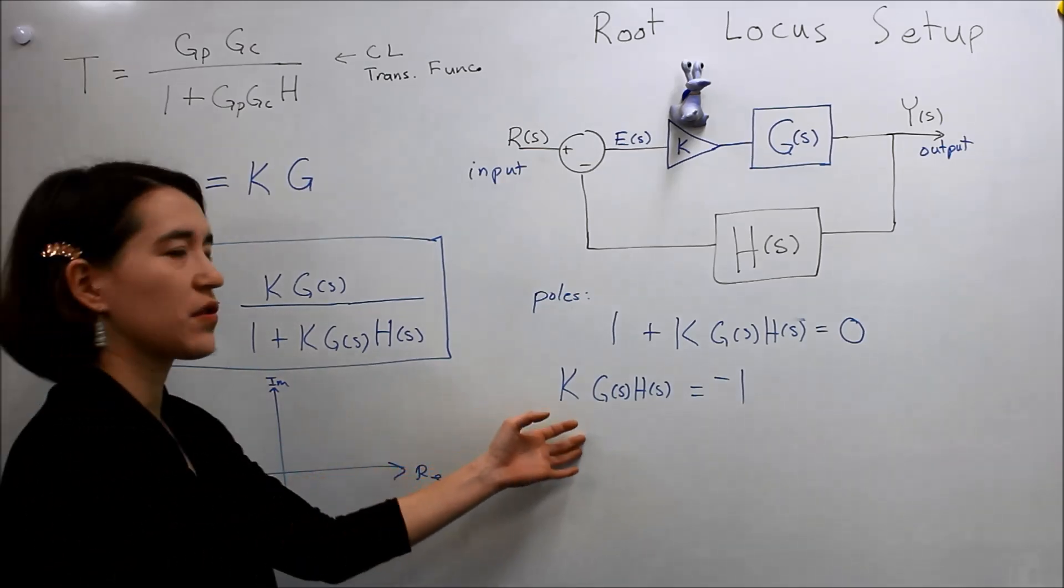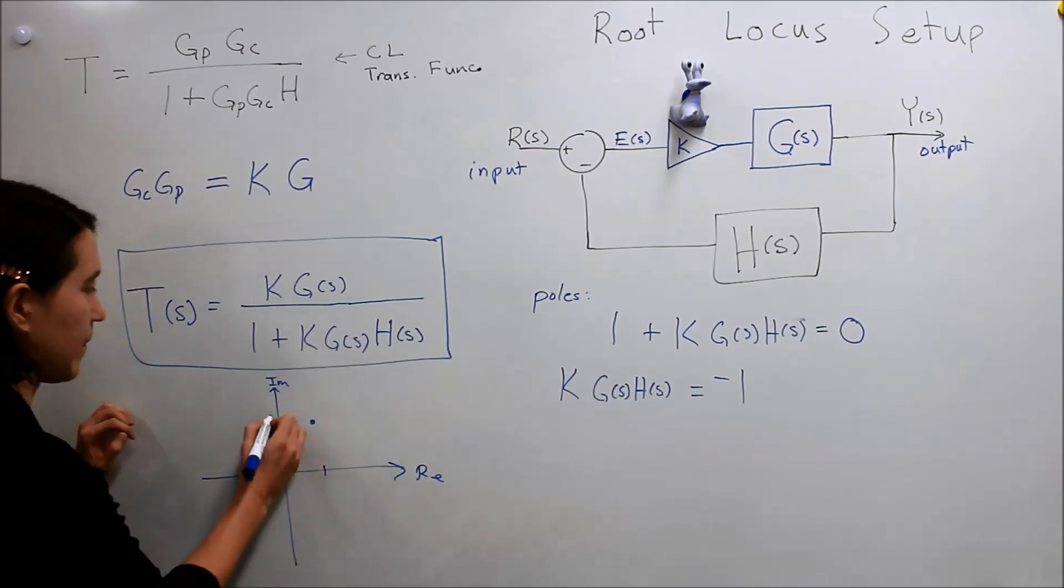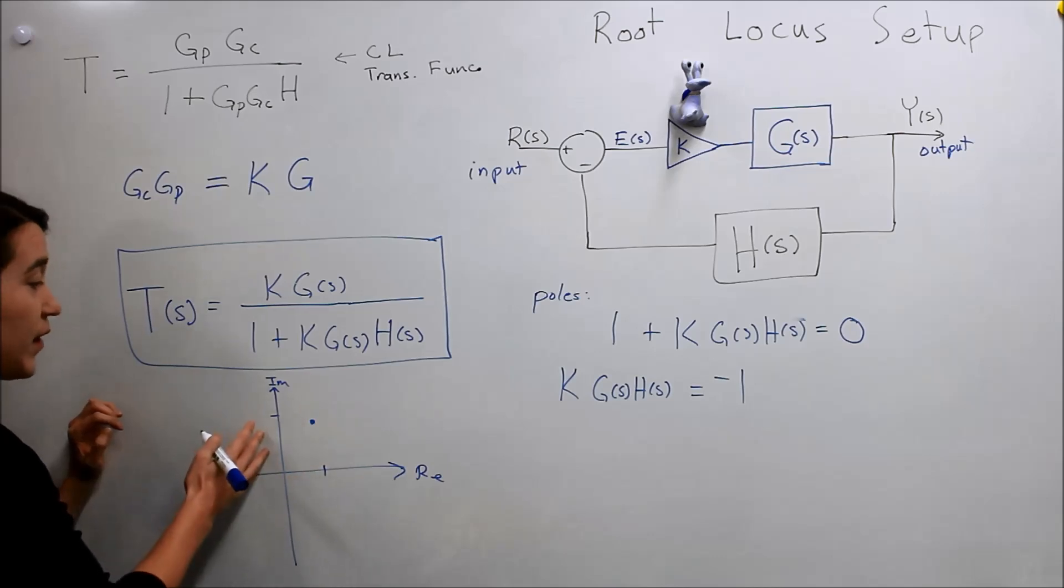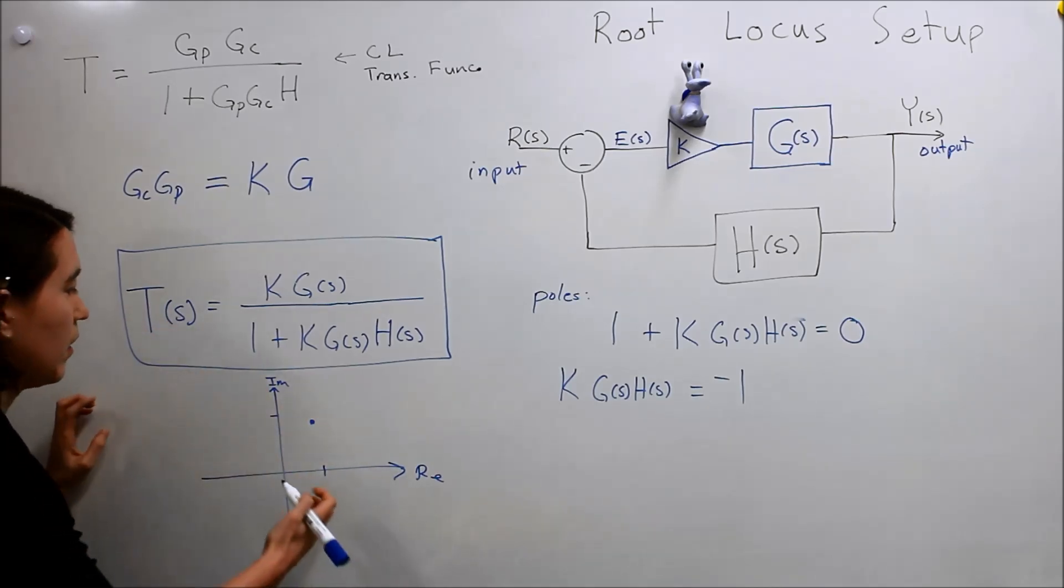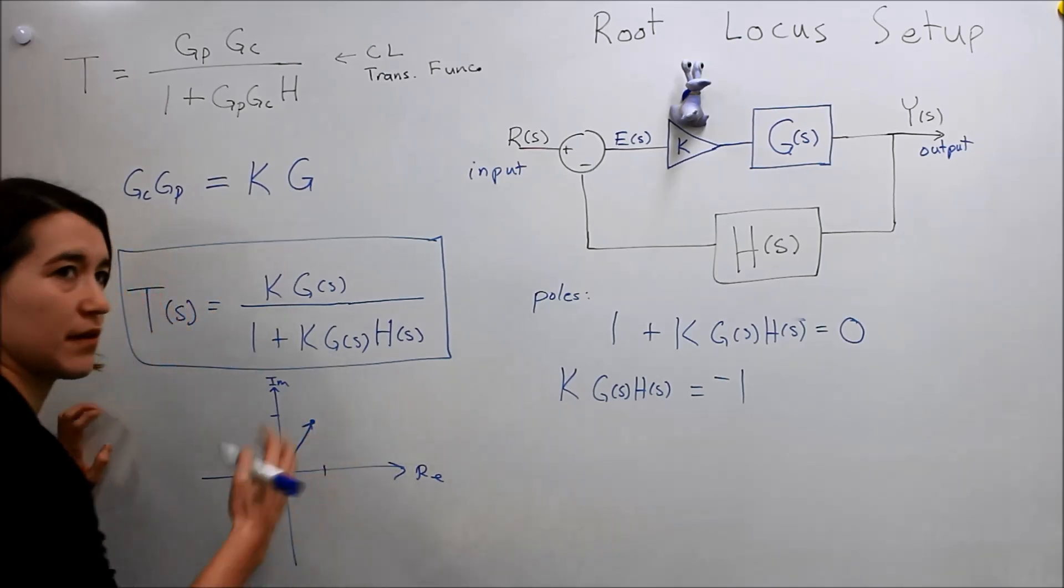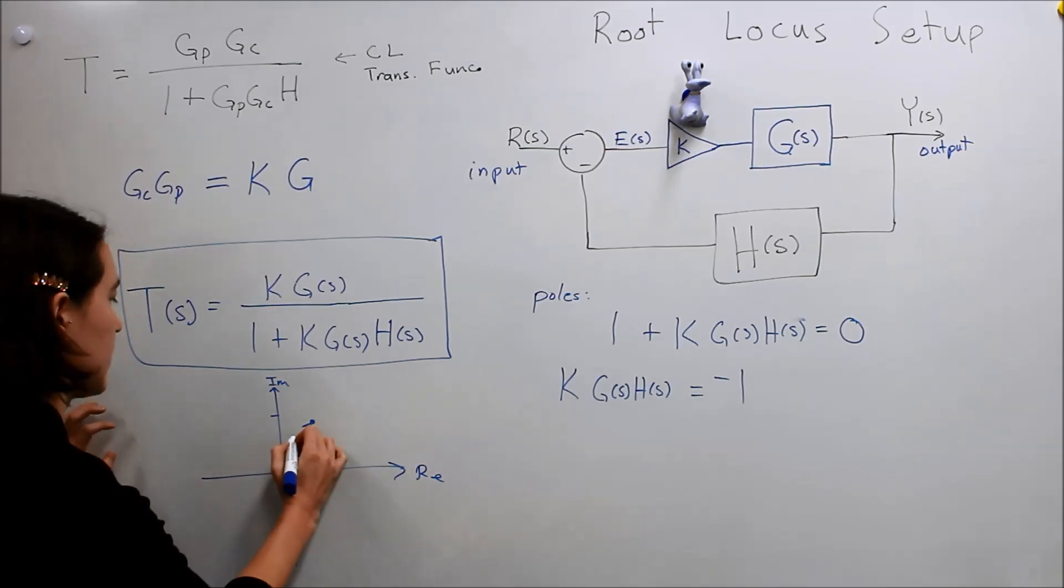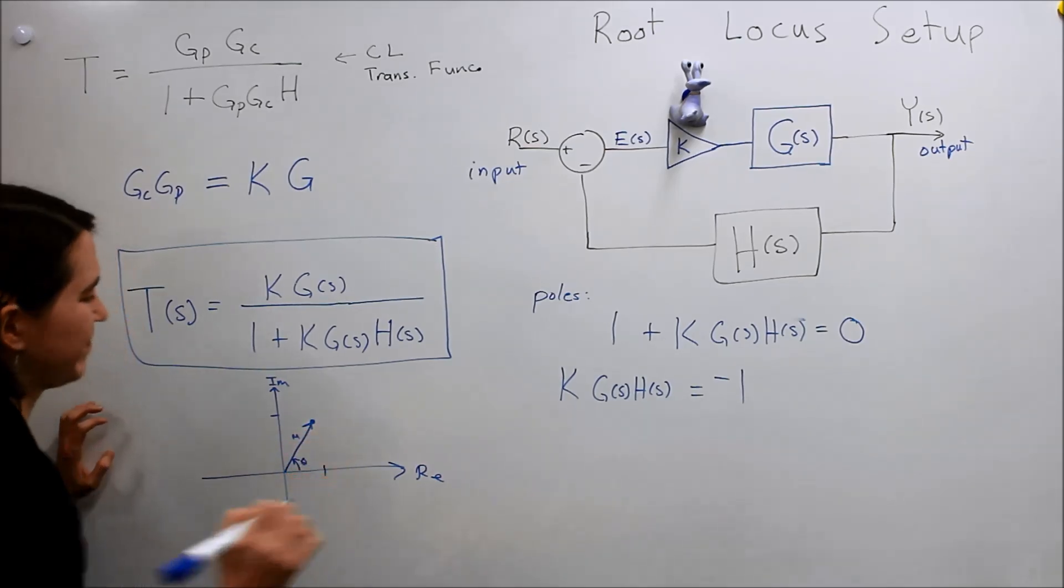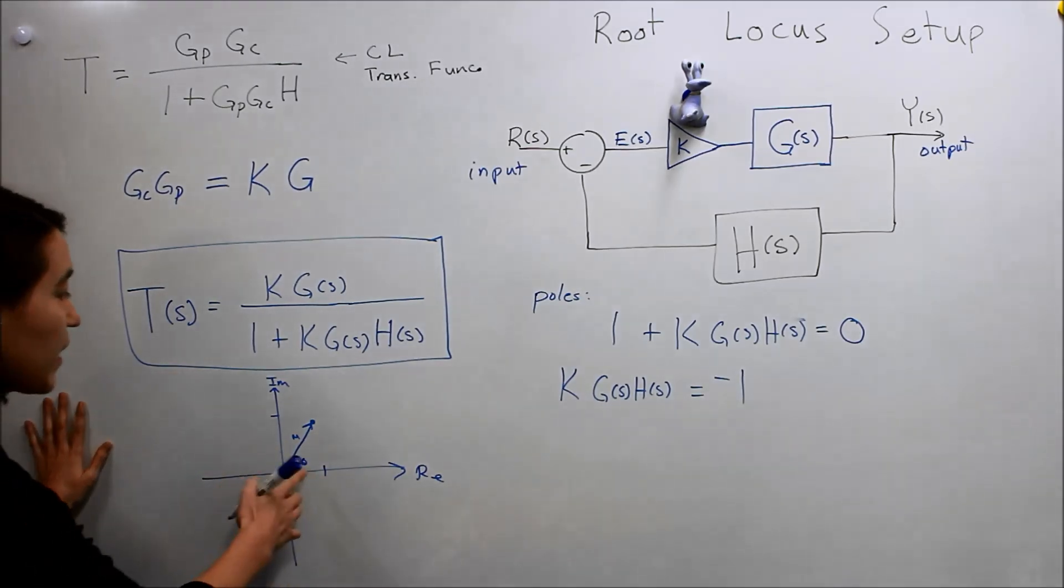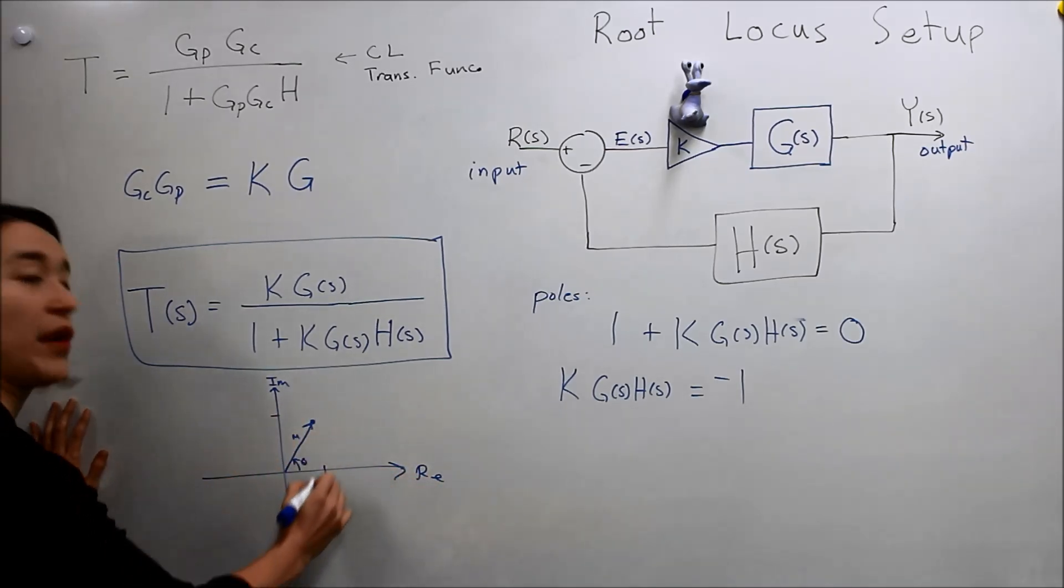And, we can also write S values as, we can either write, so say you have a point here, you can write that as some X value and Y, some Y value times J, your imaginary component. You can also write it as a magnitude. It's like a vector, so you have some magnitude and you have some angle here. So, call it M and theta. So, you can also write it in that way. And, the angle is relative to the positive part of the real axis. So, this would be zero and you can rotate around it.